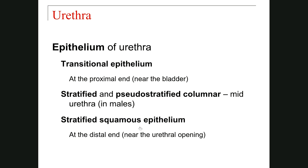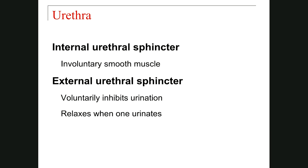So from transitional epithelium, there is a gradual change to become stratified squamous epithelium. The internal urethral sphincter is involuntary smooth muscle, out of our control. The external urethral sphincter can voluntarily control urination and becomes relaxed when we want to urinate. This completes the anatomy and histology of the parts which transport urine.